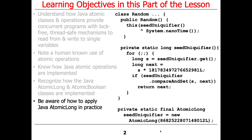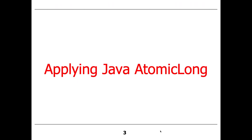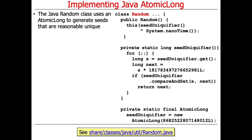This particular example is a fun one — it'll give us a chance to talk about some of the subtleties of doing all these things in practice. This is actually code that comes straight out of the Java class library. If you go look at the source code for Java 8, you'll find a really interesting use of atomic long in the Random class.